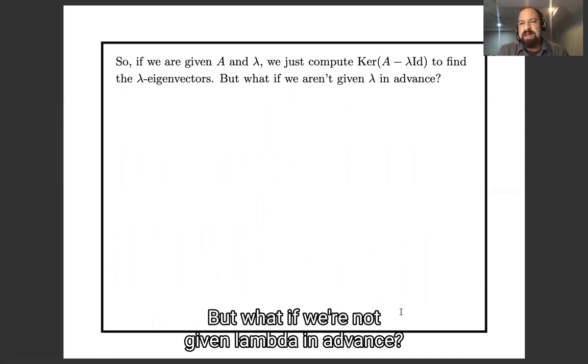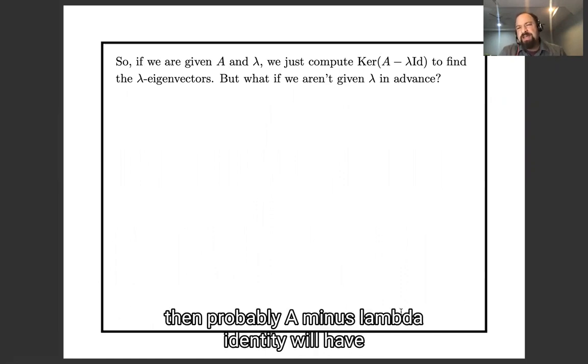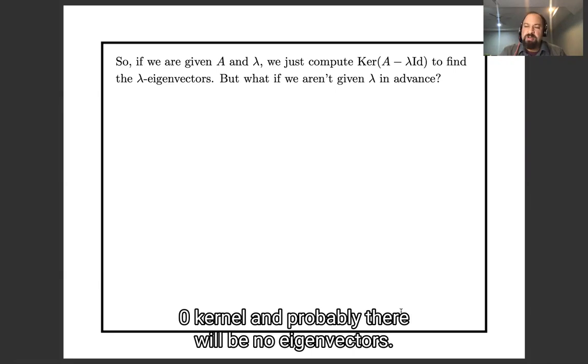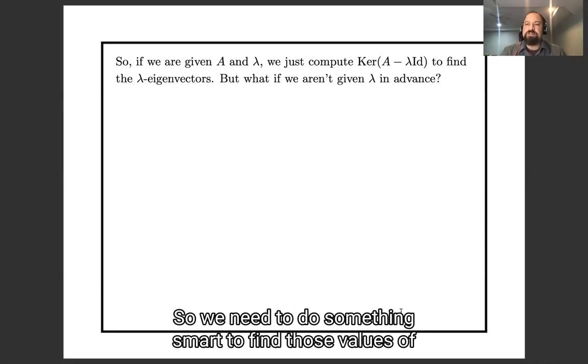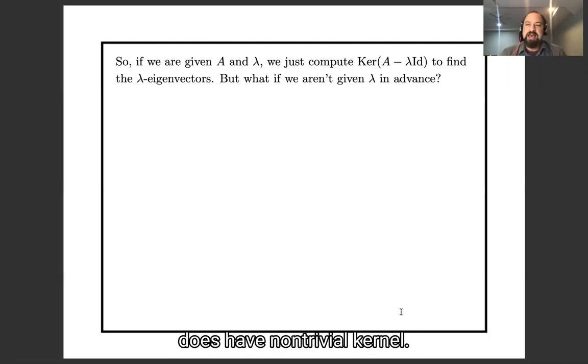But what if we're not given lambda in advance? So if we just guess a lambda, then probably A minus lambda identity will have zero kernel, and probably there will be no eigenvectors. So we need to do something smart to find those values of lambda for which A minus lambda identity does have non-trivial kernel.